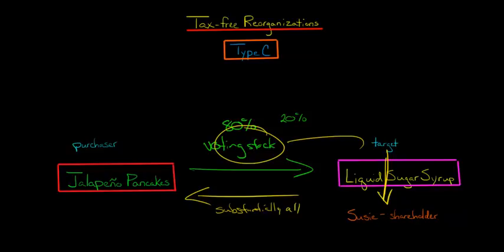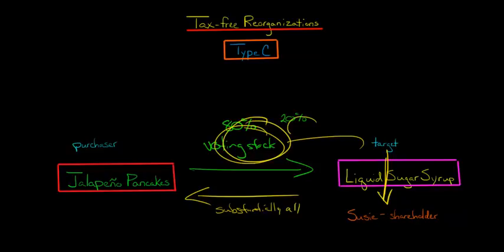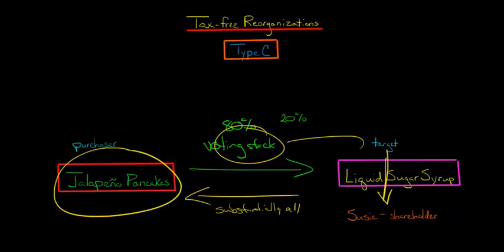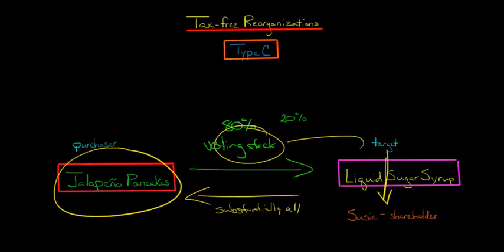They're going to distribute everything to Susie. Susie is not going to recognize any gain — this is actually going to be tax-free to Susie. It's a tax-free reorganization because Susie is technically getting the voting stock and other property from Liquid Sugar Syrup, not directly from Jalapeno Pancakes. And Liquid Sugar Syrup isn't going to recognize any gain either, unless there are some assets that they don't transfer to Jalapeno Pancakes — those few retained assets, when Liquid Sugar Syrup is forced to liquidate and give everything to Susie, might actually recognize a gain.